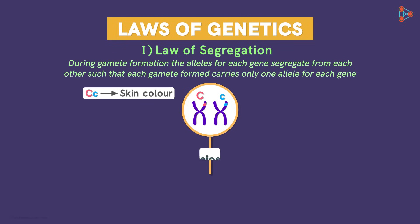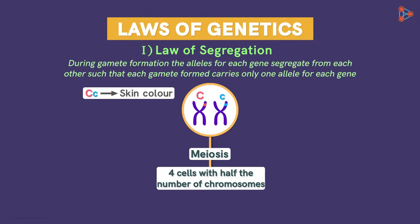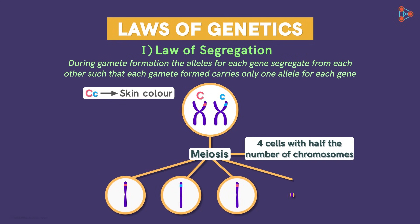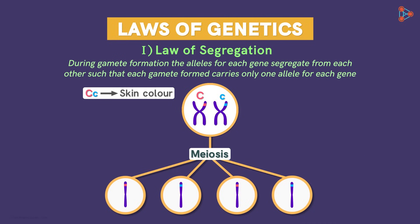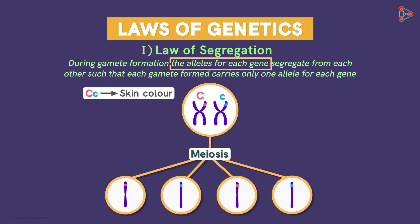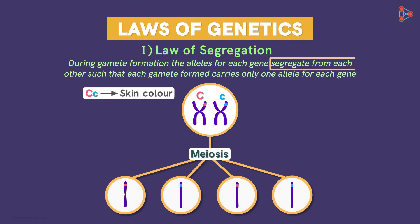Meiosis is the type of cell division which gives us four cells with half the number of chromosomes. The second part says the alleles of each gene — so here, C and C is what we are referring to, meaning one allele from the gene set. The next part of the statement is: segregate from each other.